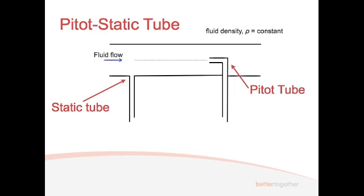We can connect these two tubes together to form a U-tube manometer. We've got P1 above the static tube, and P2 at the entrance to the pitot-tube. Combining the pitot-tube and static tube gives us a pitot-static measurement device. There's a pressure difference between P1 and P2, which we'll cover in a second.